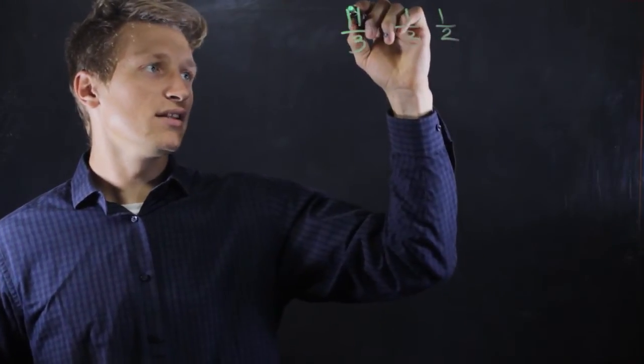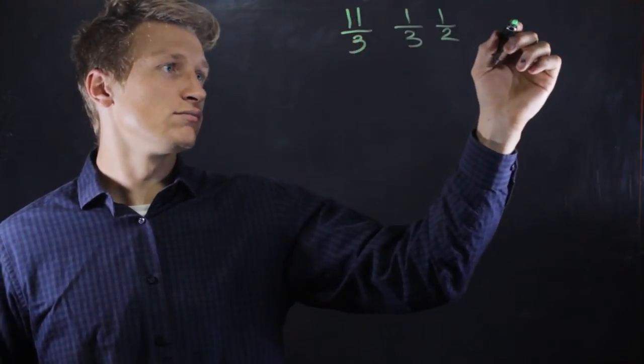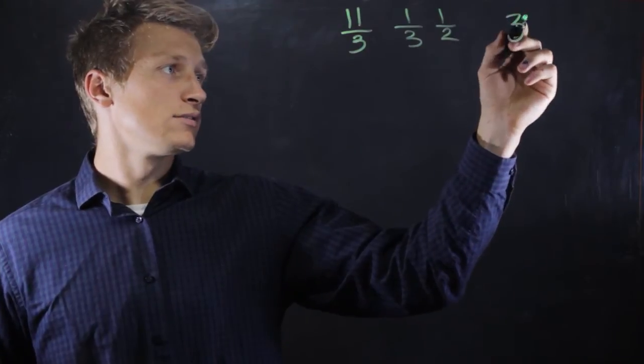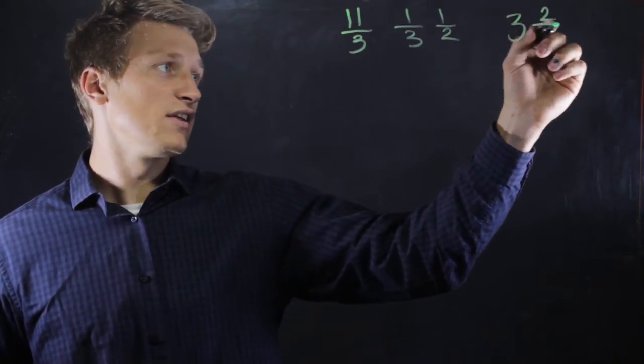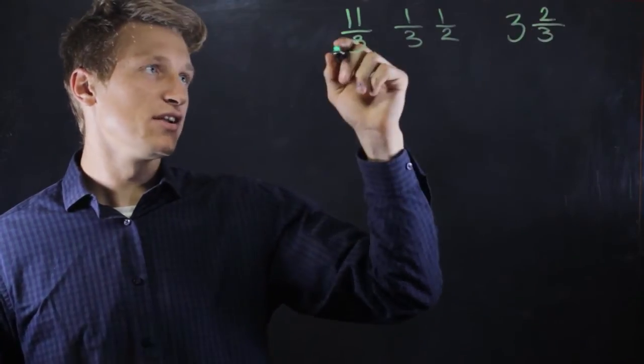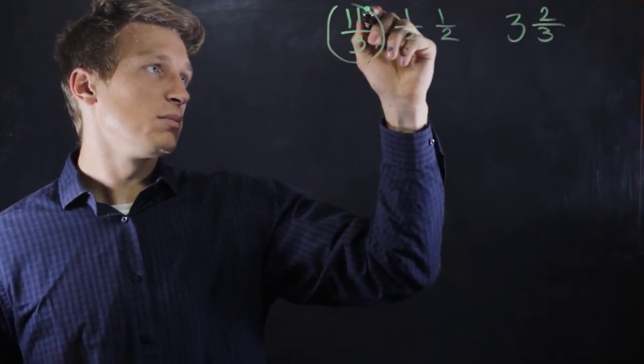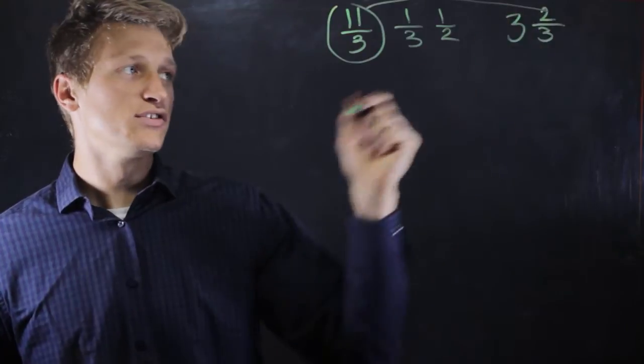So let's try that. Divide 11 by 3, we'll get 3, and then the remainder is 2, and then keep the denominator the same. So 11 thirds becomes 3 and 2 thirds.